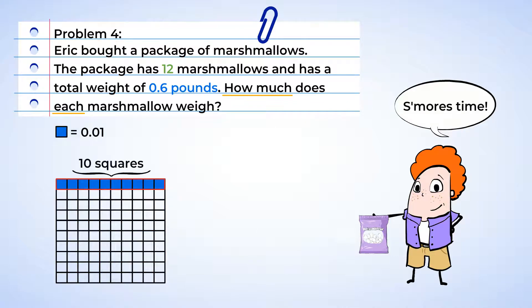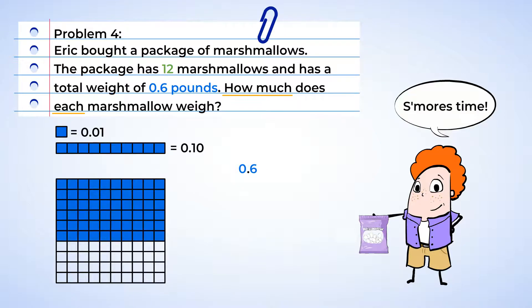And each row has ten squares. So a row is one-tenth of the array. And our dividend, sixty-hundredths, equals six rows. And so we're going to shade in six rows in the array. And our divisor, twelve, means that we need to split sixty-hundredths into twelve equal groups.